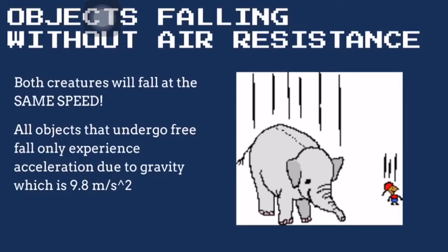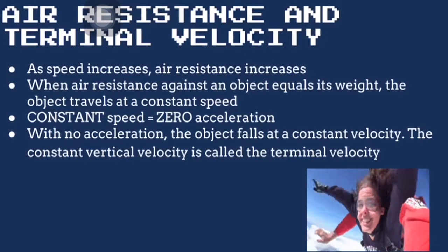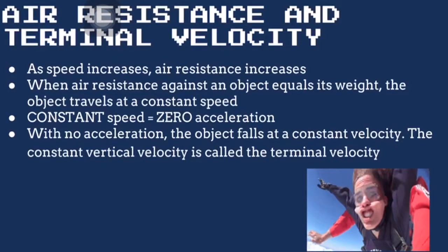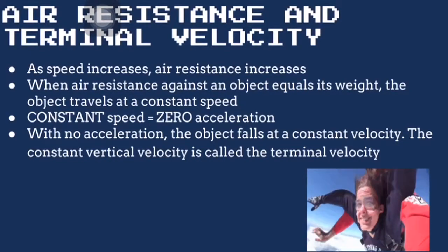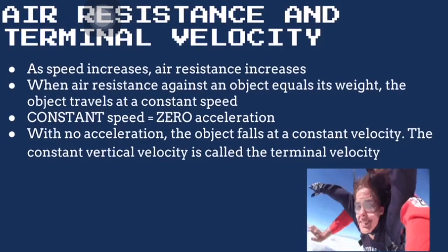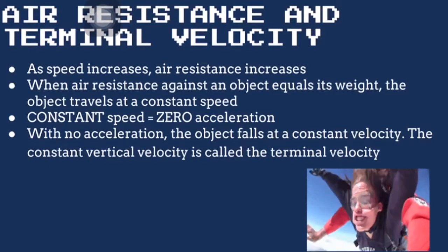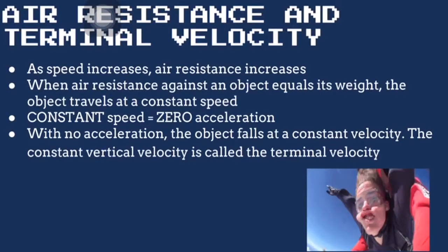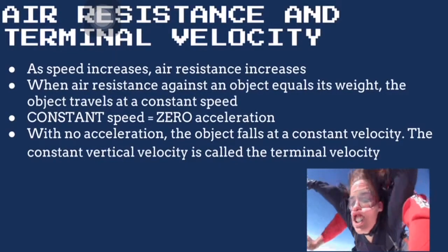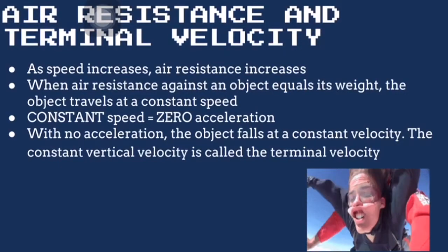Objects falling with air resistance experience greater air resistance as their speed increases. When the air resistance against an object equals its weight, the object starts to travel at constant speed, because there is no net force acting on it and thus zero acceleration. With no acceleration, the object falls at a constant velocity. This constant velocity is called terminal velocity.